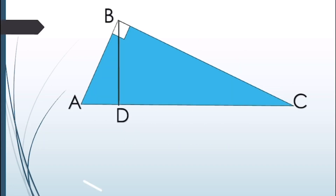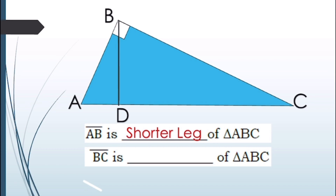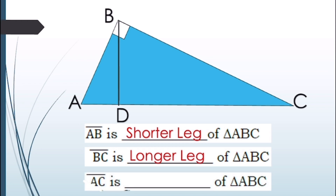In this activity, let's identify the following. Line segment AB is the shorter leg of triangle ABC. Line segment BC is the longer leg of triangle ABC. And line segment AC is the hypotenuse of triangle ABC.